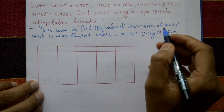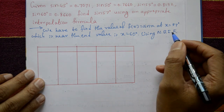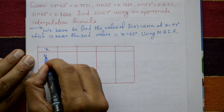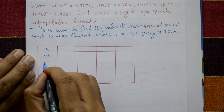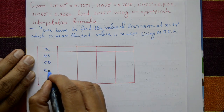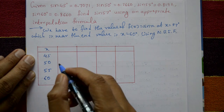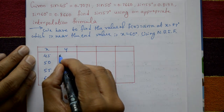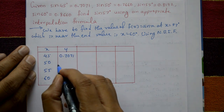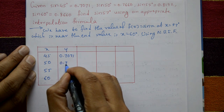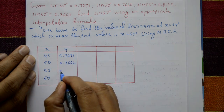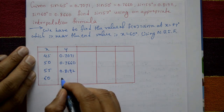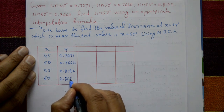Newton's backward interpolation formula requires setting up the data table. The x values in degrees are: 45°, 50°, 55°, and 60°. The corresponding y = f(x) values are: 0.7071, 0.7660, 0.8192, and 0.8660.